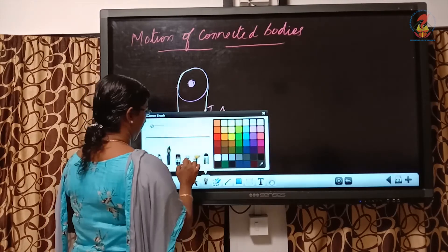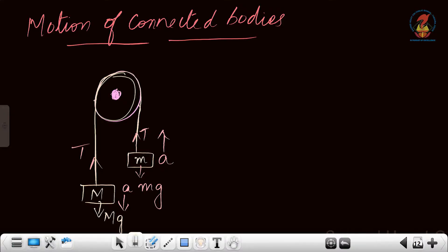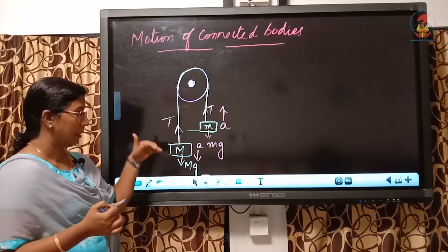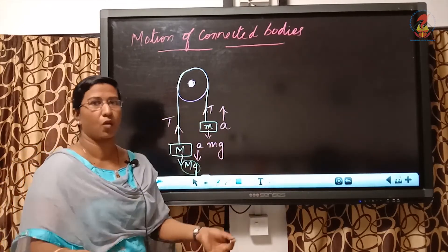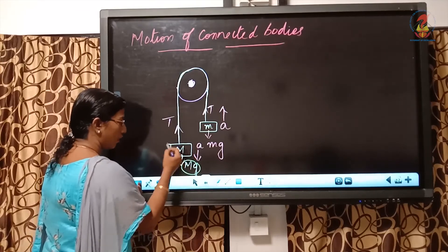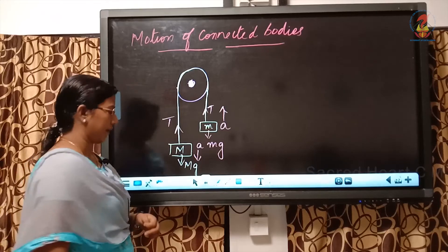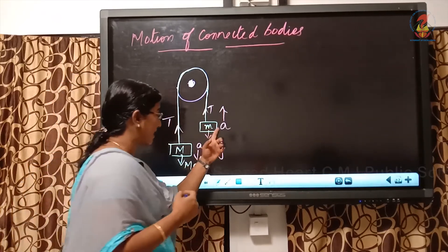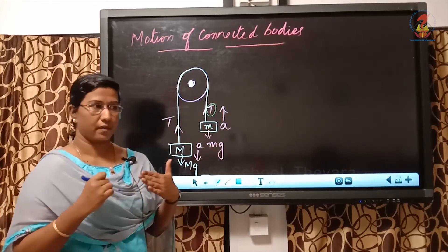I have a frictionless pulley, and on it I have passed a rope with 2 masses — capital M and small letter m — tied to both ends. Since capital M is the heavier mass, its weight acting downwards will pull the rope down. The rope will come down with acceleration a acting downwards. The smaller mass small m G will go up, and T is the tension produced in the string. My aim is to find out the acceleration and the tension created in the rope.